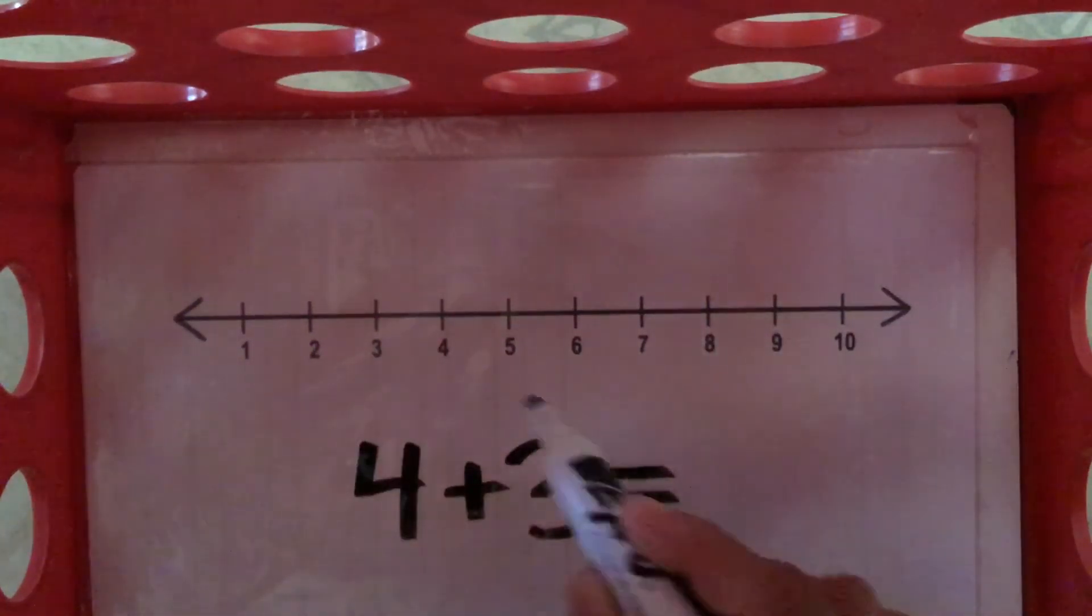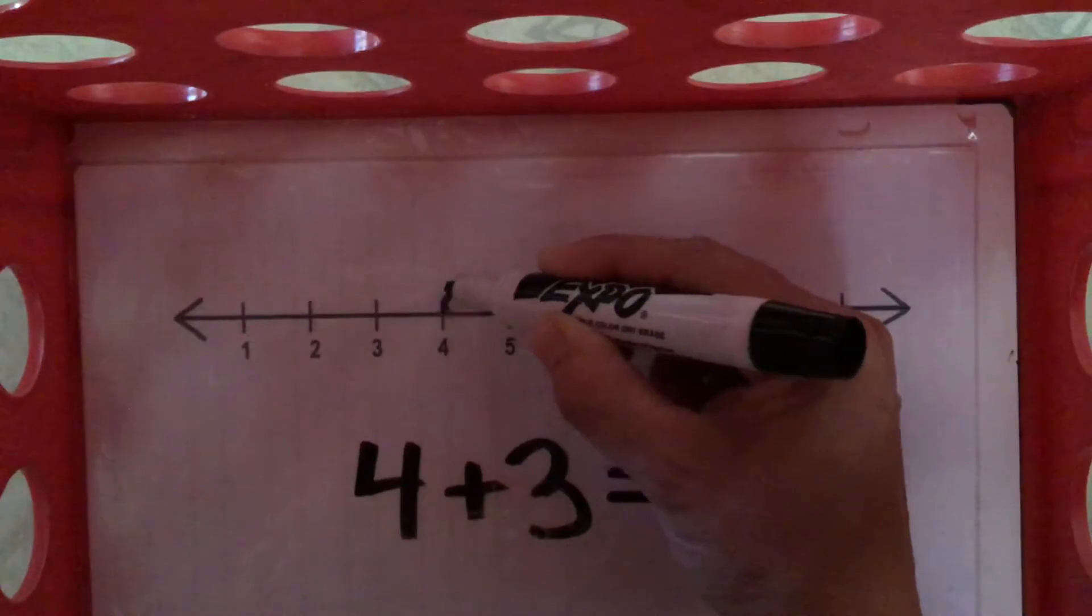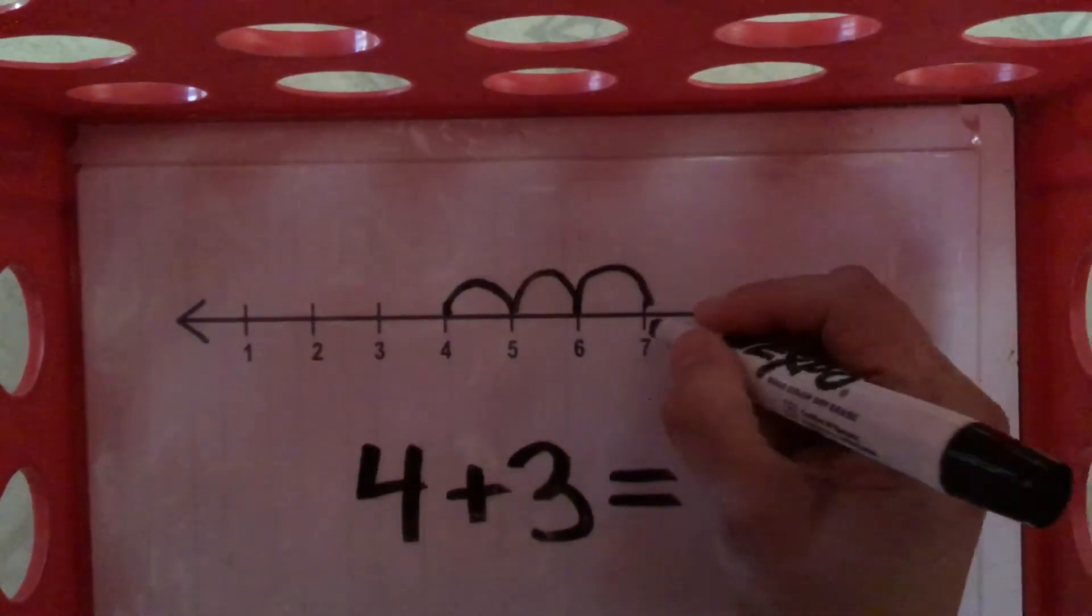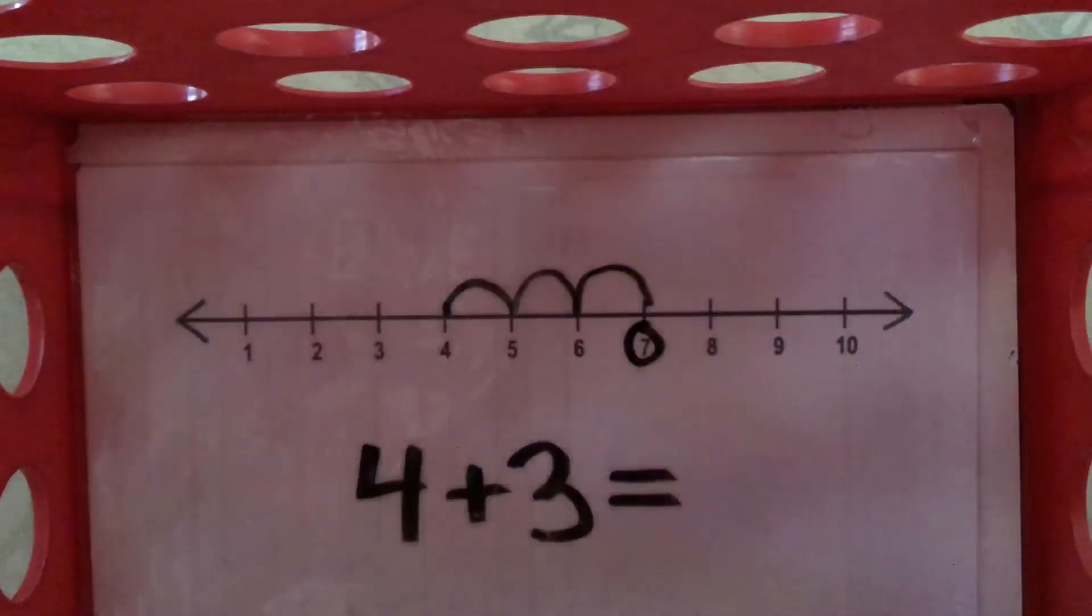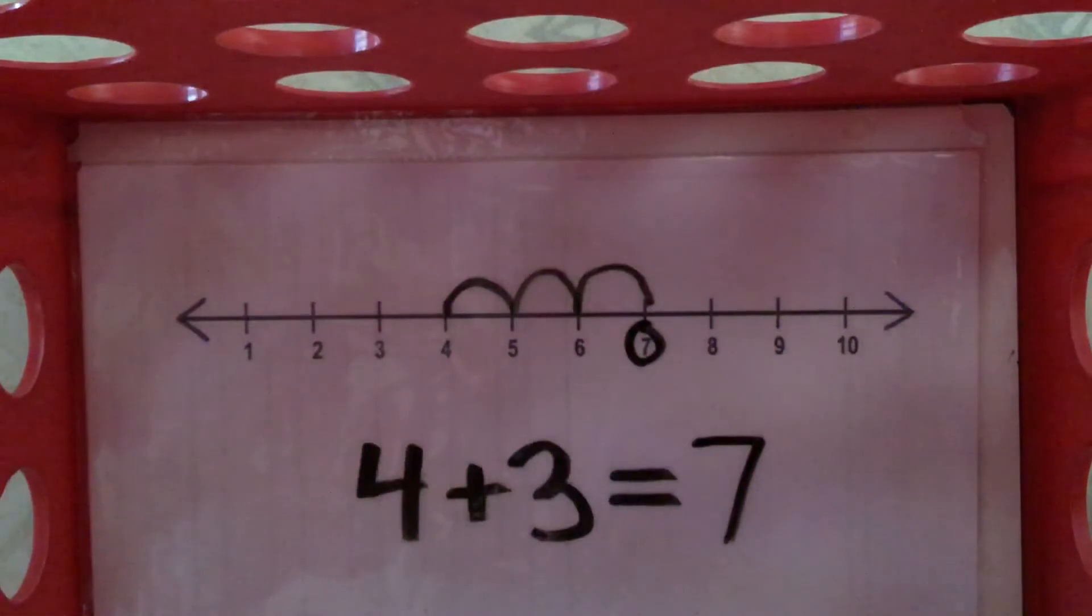So, if I want to add the 4 and the 3, I start with my 4 on the number line. Then I'm going to jump 3 spots. 1, 2, 3. And I stop here. That is our answer. 7. 4 plus 3 is 7.